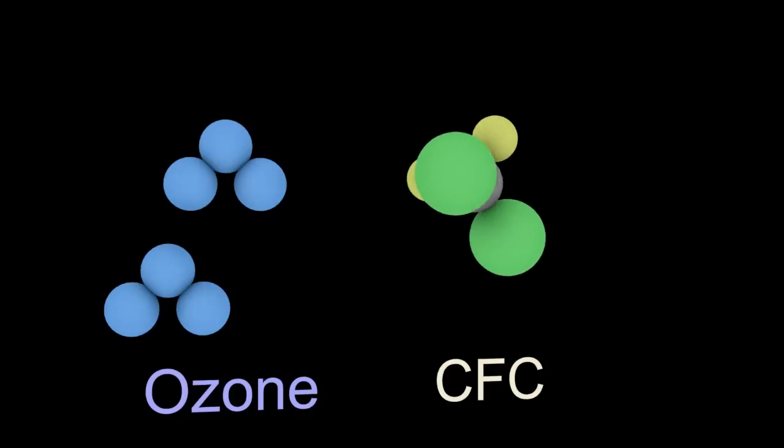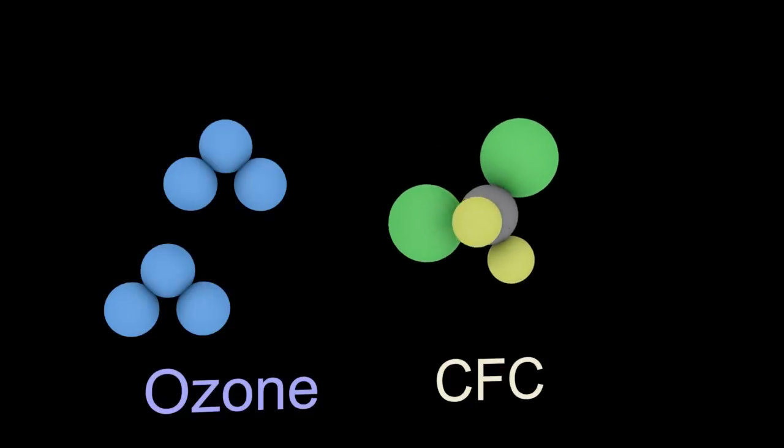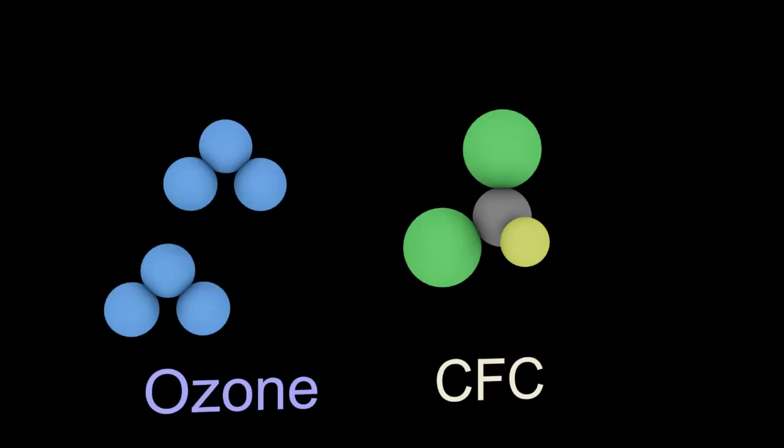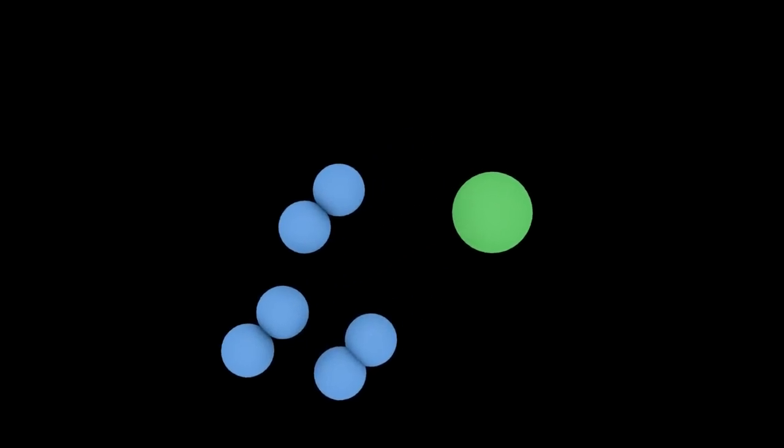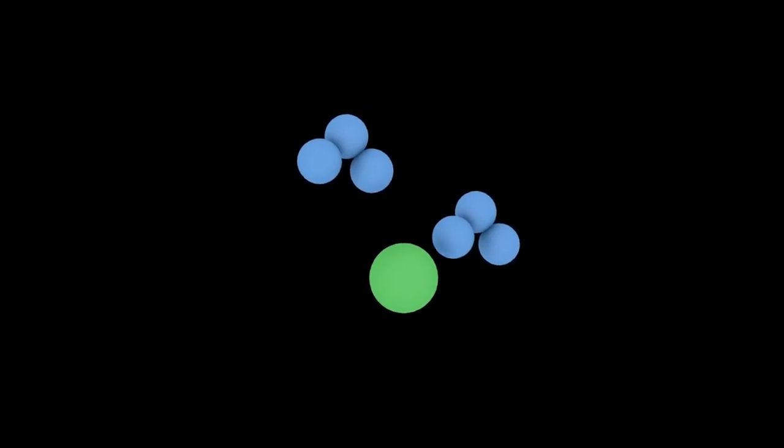The CFC or chlorofluorocarbon is released in the troposphere but goes up to the ozone layer near the stratosphere, where high-energy ultraviolet light breaks off a chlorine radical which then proceeds to destroy the ozone.